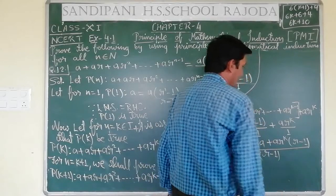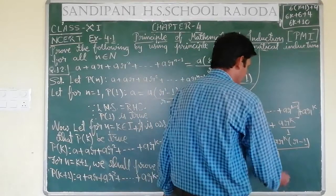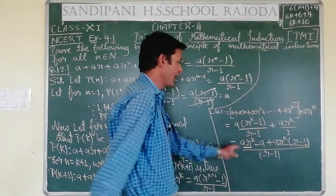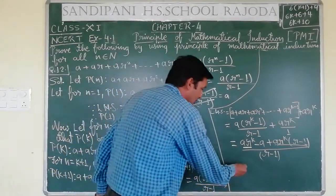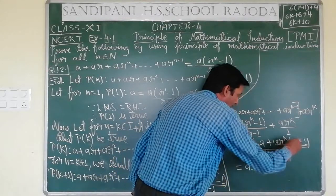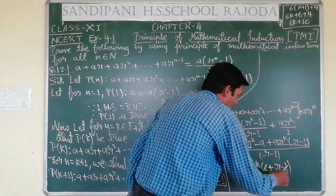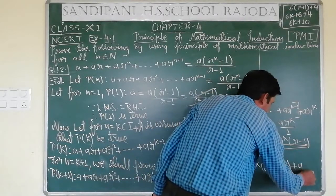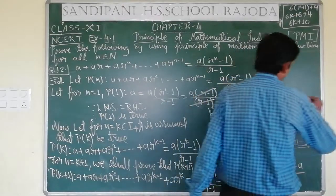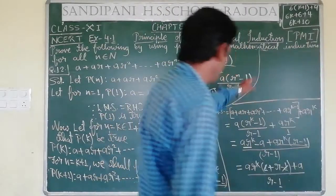After taking LCM, the numerator becomes: a(r^k - 1) + ar^k(r - 1), all over (r - 1). In the numerator, ar^k is common from both terms. Taking ar^k common, we get 1 from the first part plus (r-1) from the second. So 1 and -1 cancel, leaving ar^k · r + A, all upon (r-1).